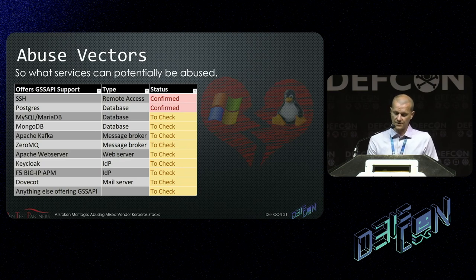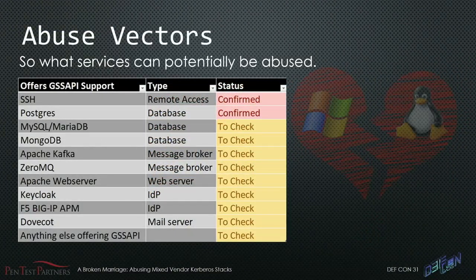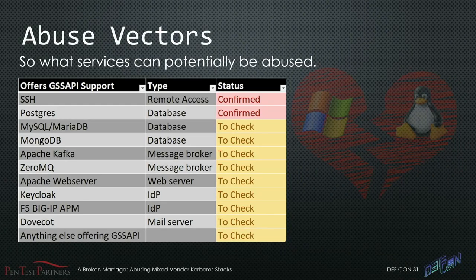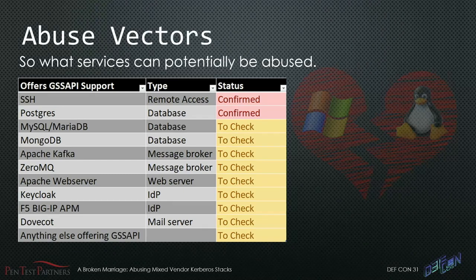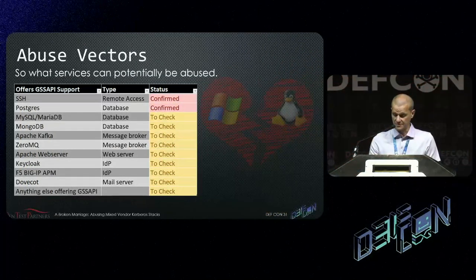These are the services that implement Kerberos authentication via GSS API that I've looked at so far. SSH is confirmed vulnerable, as is Postgres database. I haven't had time to check all the others yet, but essentially if any of these are claiming Kerberos authentication and GSS API support and they don't look at the Windows PAC, they're all going to be vulnerable to this sort of attack.